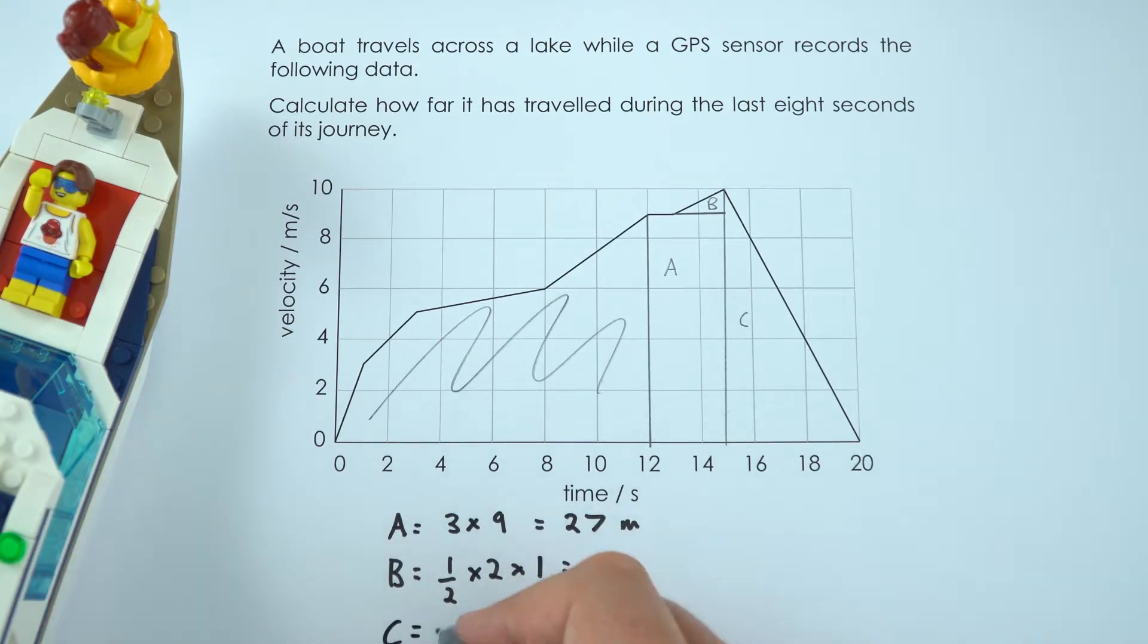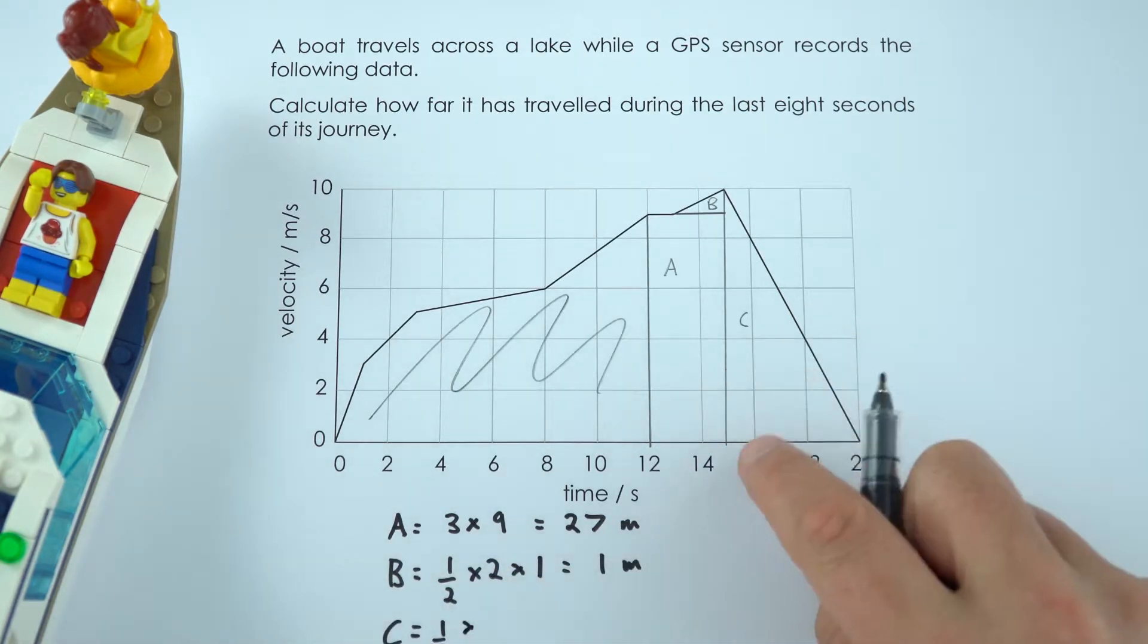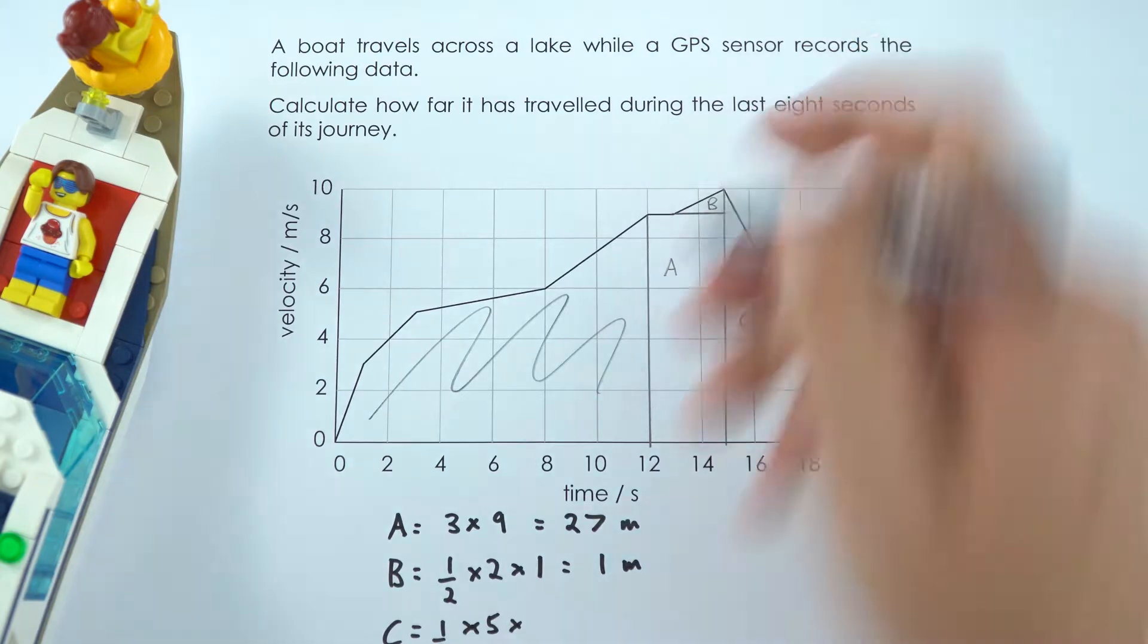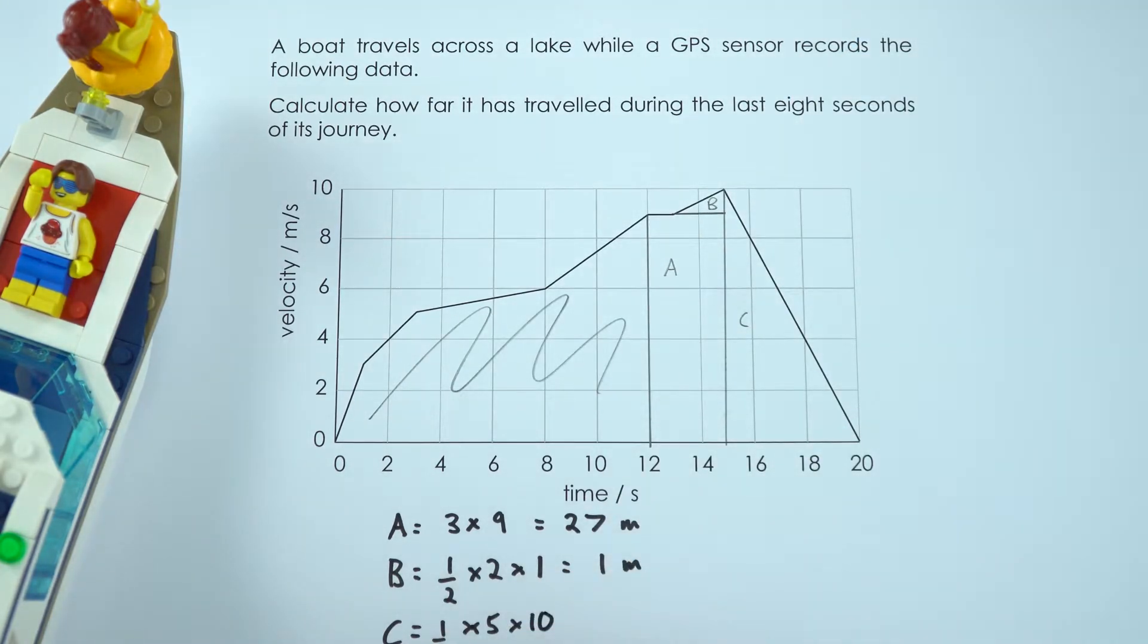Similarly for C again it's a triangle so it's a half the base from 15 to 20 so that's 5 multiplied by the height which is from 0 up to 10 so a half of 50 is the same as 25 meters.